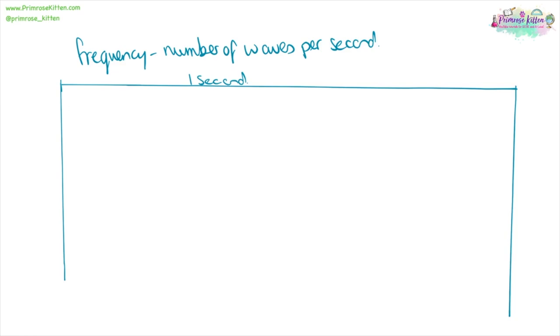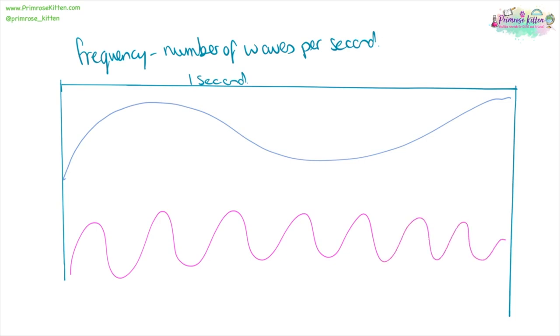Frequency is the number of waves per second. So if we look at this block here as a second in time, something that will have a low frequency, we are not going to see many peaks in one second. But something that has a high frequency, we will see lots of peaks or lots of waves within one second.